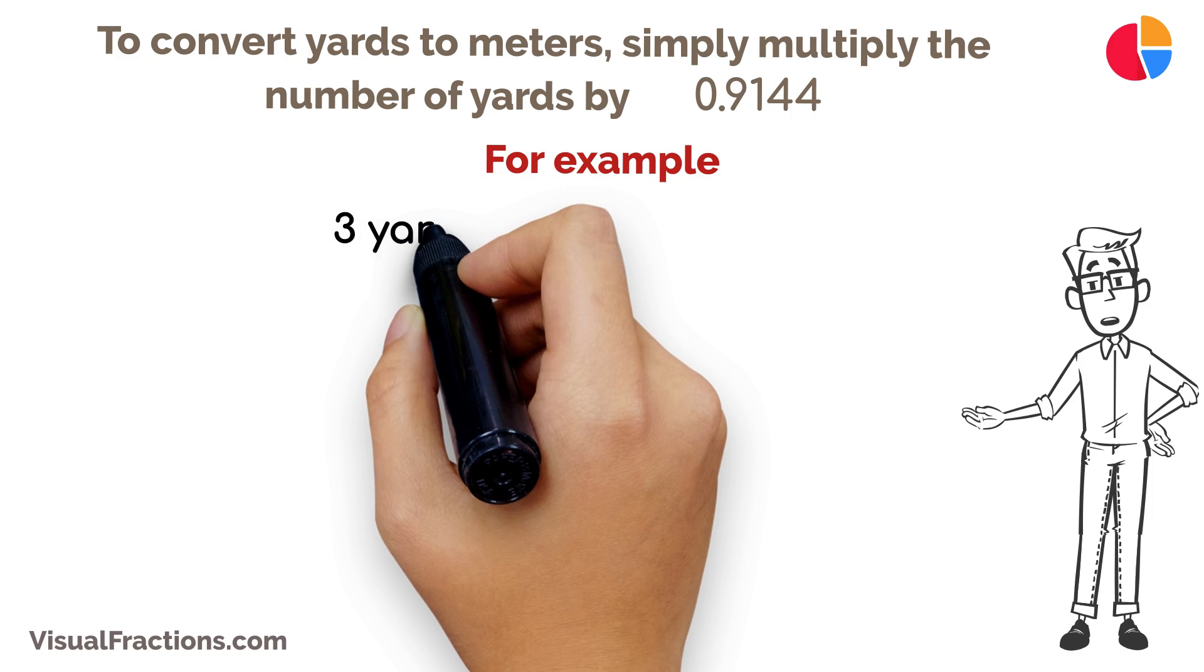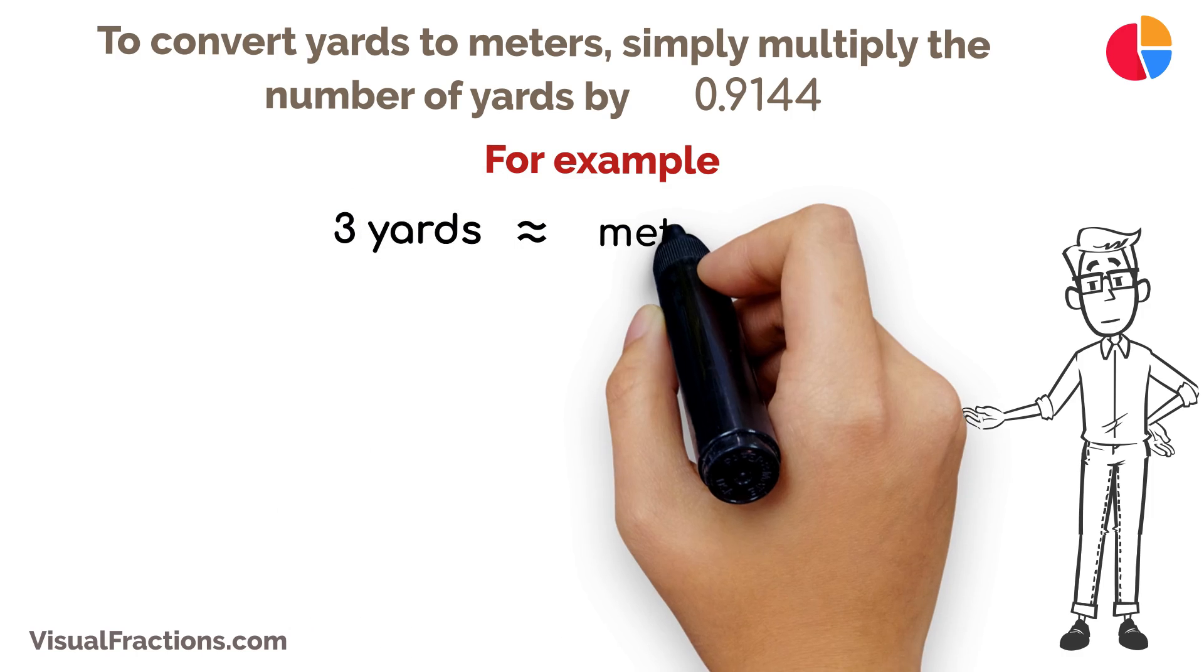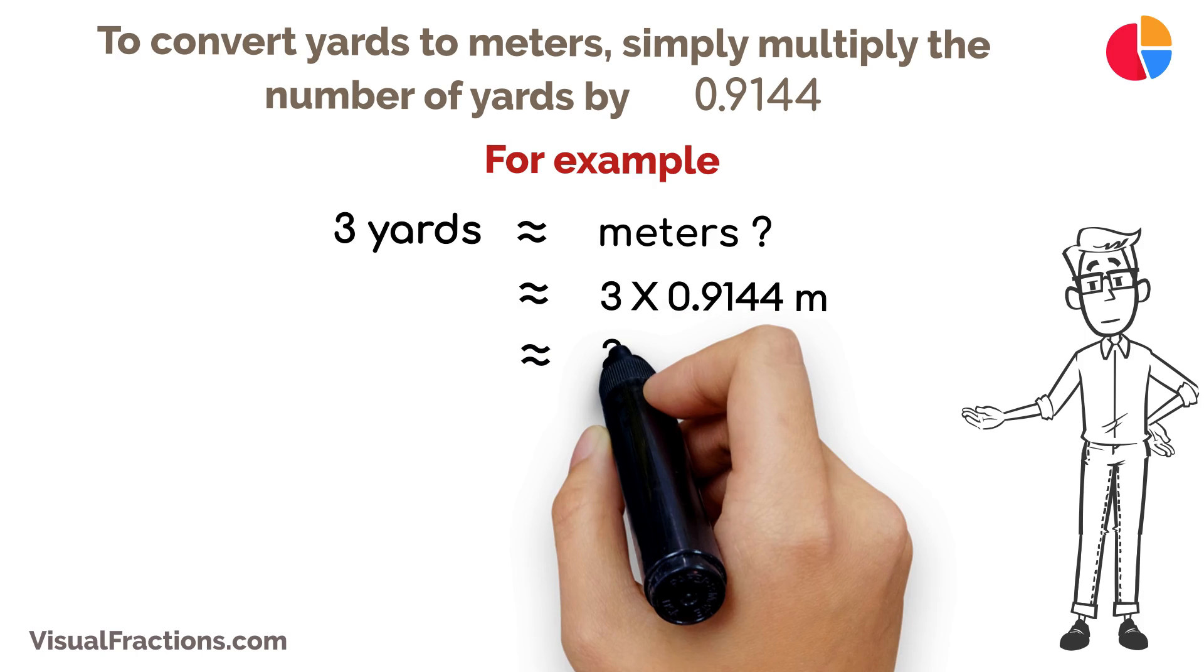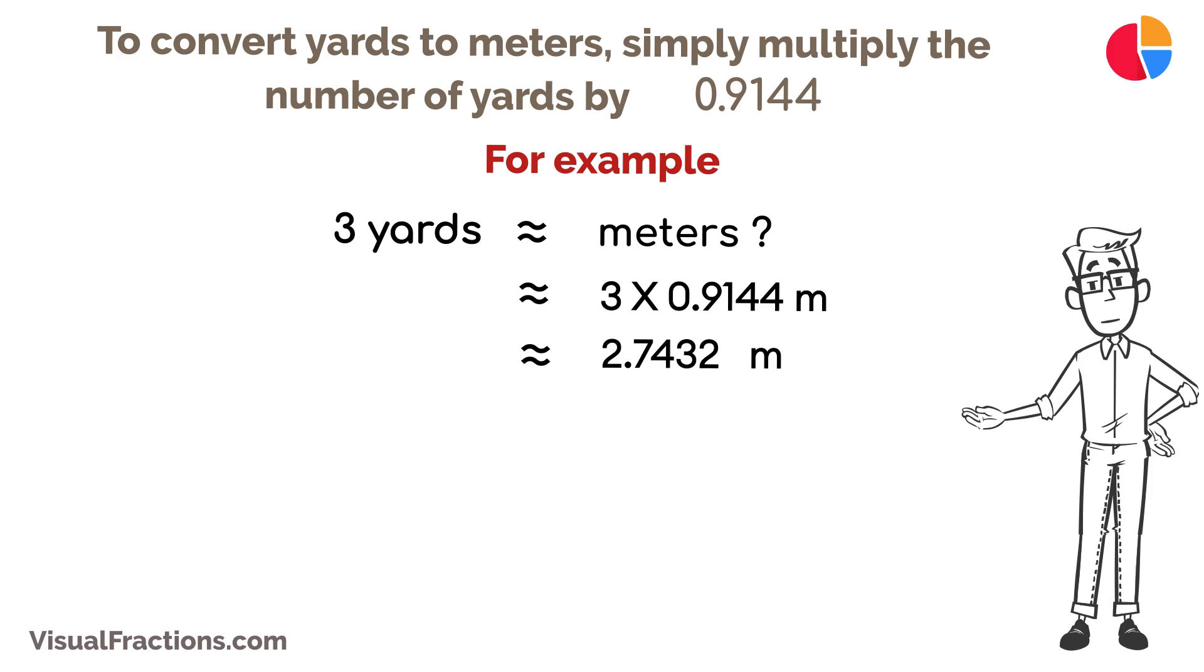For example, if you have a length of 3 yards and you need to convert it to meters, multiply 3 yards by 0.9144. This calculation results in approximately 2.7432 meters.